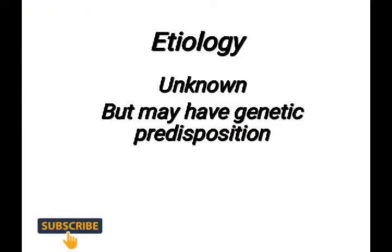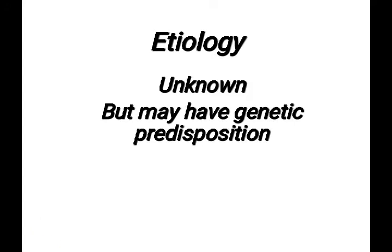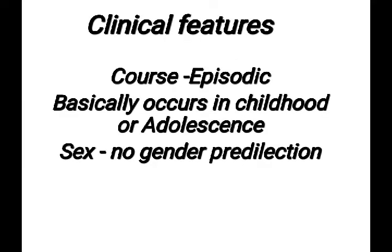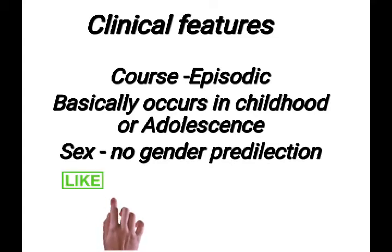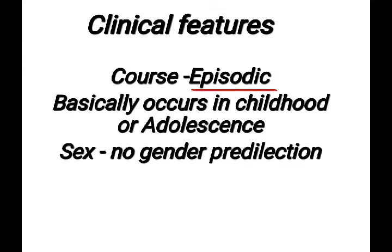Regarding etiology, for Melkersson-Rosenthal Syndrome the etiology is unknown, but it may have a genetic predisposition. The syndrome is basically episodic in nature, with onset in childhood or adolescence, and there is no sex predilection — it affects both males and females.